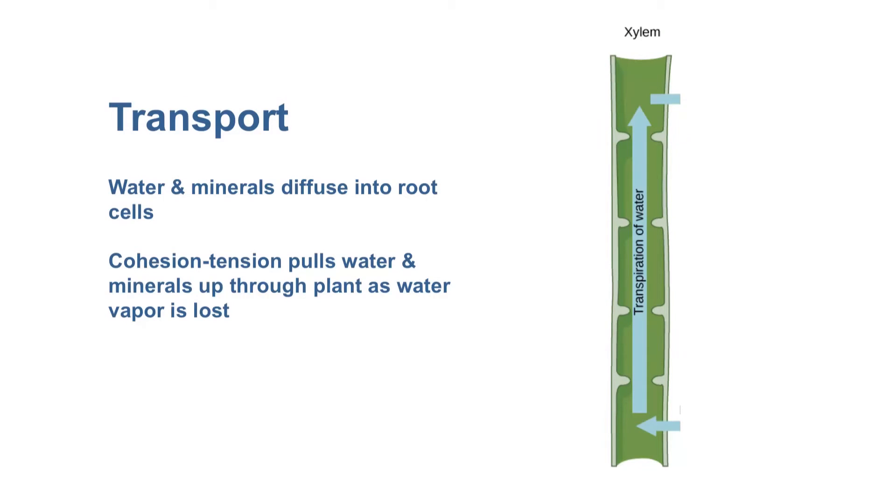So water and minerals diffuse into a plant through the root cells, through the root system, and then up into the rest of the plant through a process called cohesion-tension.